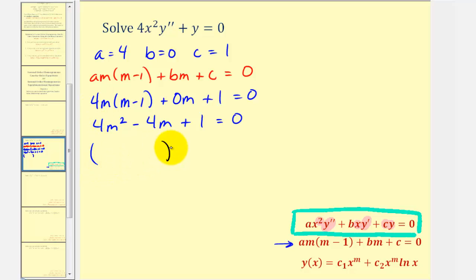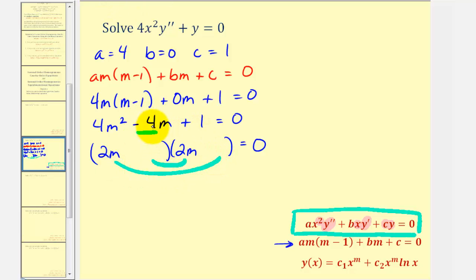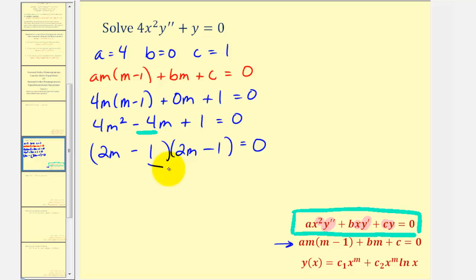It looks like this is going to be factorable, so we'll have two binomial factors. The first terms must come from the factors of four m squared — let's try two m and two m. The second positions must come from the factors of positive one, such that the sum of the inner and outer products would be negative four. We'll use minus one and minus one. The inner product is negative two m, the outer product is also negative two m, giving a sum of negative four m. So we factored this correctly, and notice we have two equal binomial factors, giving two real equal roots. This means two m minus one equals zero, so m equals one half, meaning m sub one and m sub two are both one half.